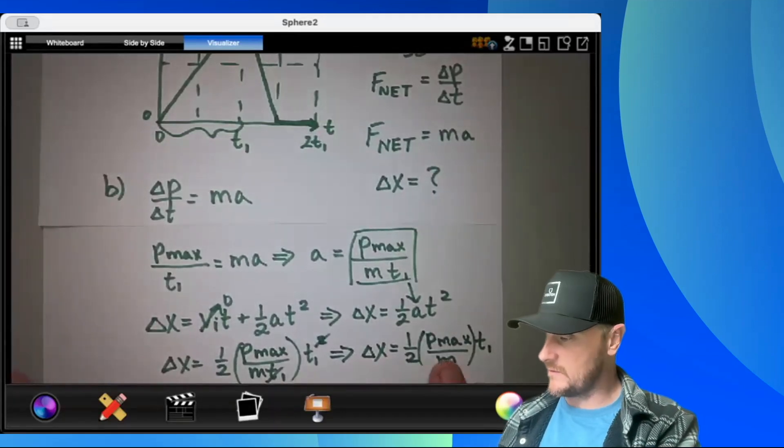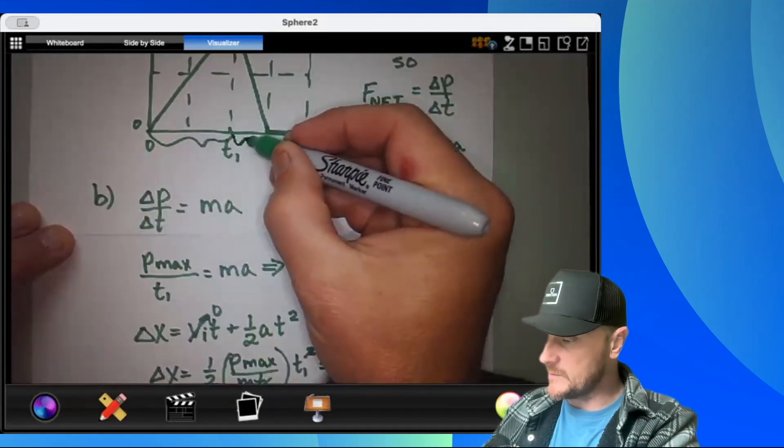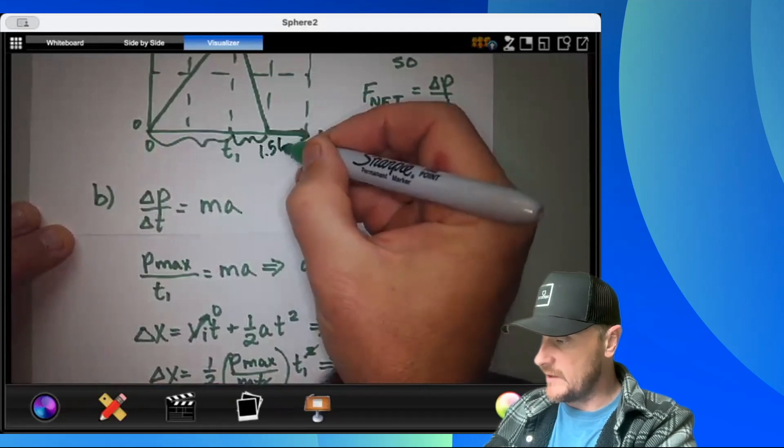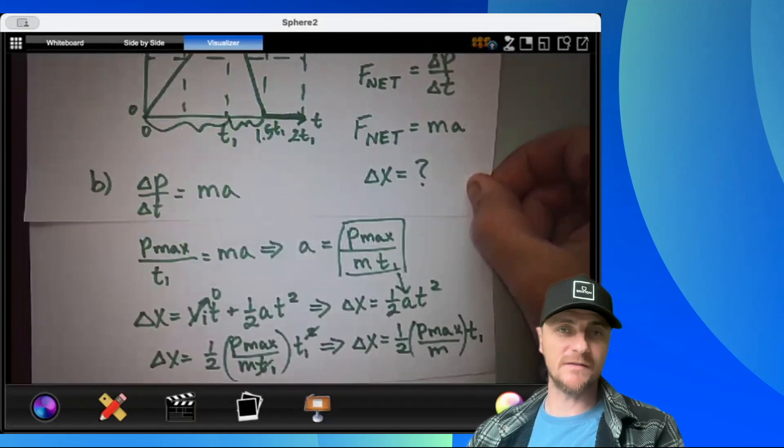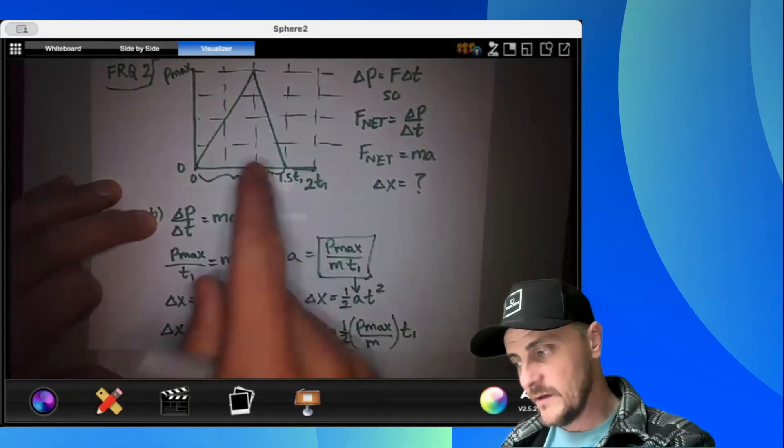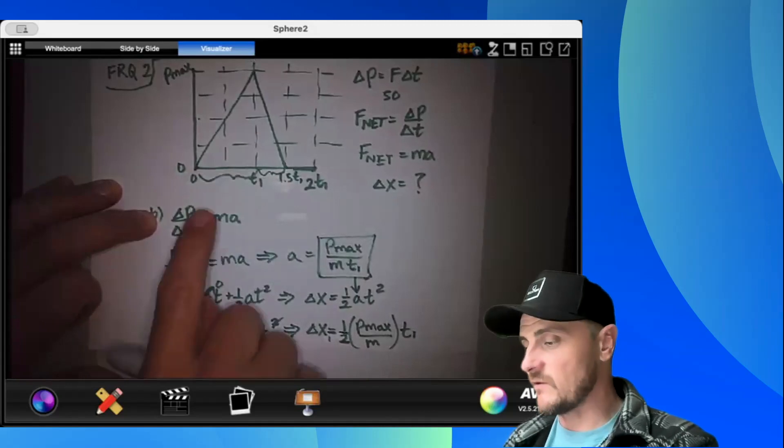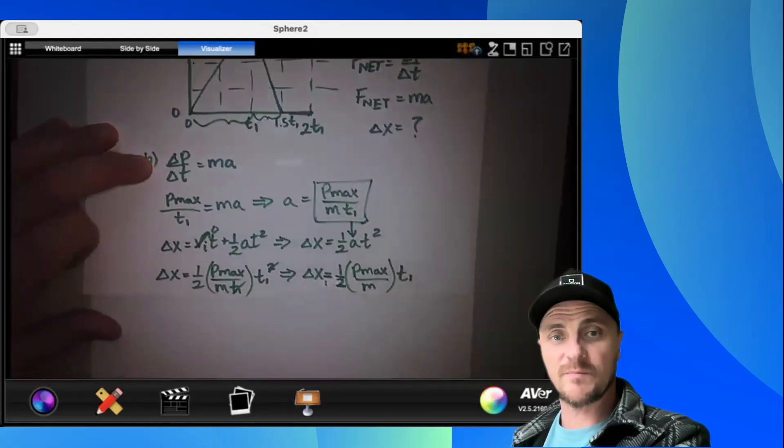Now keep in mind, this is only the displacement for this first time interval. Now I need a displacement for this time interval from t1 to 1.5 t1. That is to say we only have 0.5 of a t1 to consider. And if I'm traveling for only 0.5 of a t1, then shouldn't I only go half the displacement that I traveled when I did a full t1? The answer is yes. Let's prove it out.